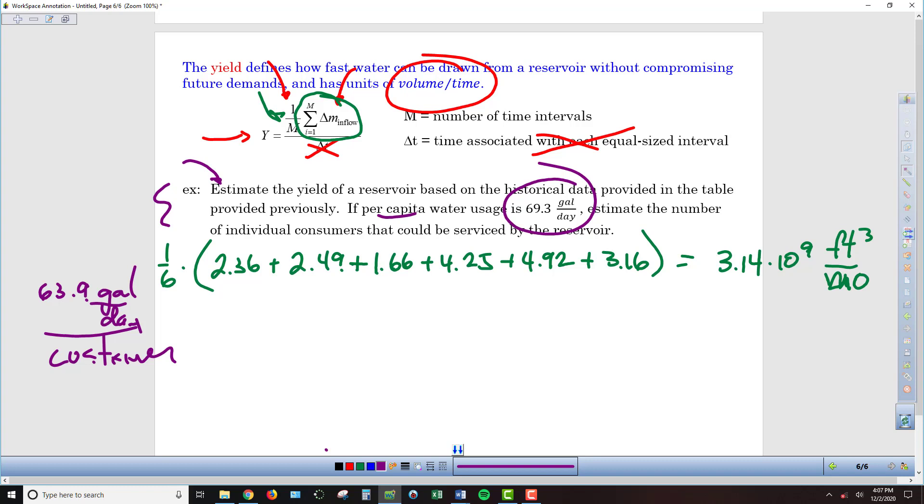And so we're then asked, what is the estimated number of individual consumers, customers, that can be serviced by this reservoir if we're going to limit ourselves to a monthly drawdown, the yield of 3.14 billion cubic feet per month. So this is really kind of a dimensional analysis question that we've got to work with. So we start off with this 63.9 gallons per day per customer, and I need to start to convert to units that line up with this guy right here. Because eventually I want to end up with a number of customers. So I need to get these dimensions here, this 63.9 gallons per day, into cubic feet per month.